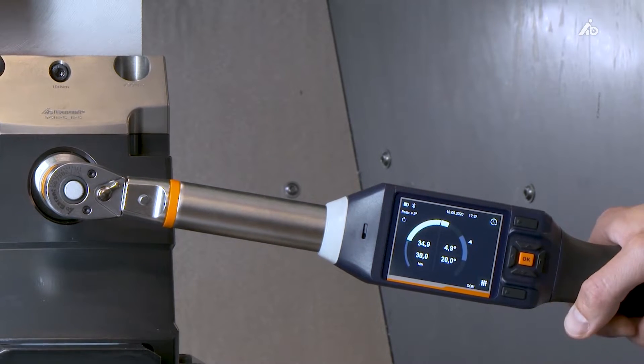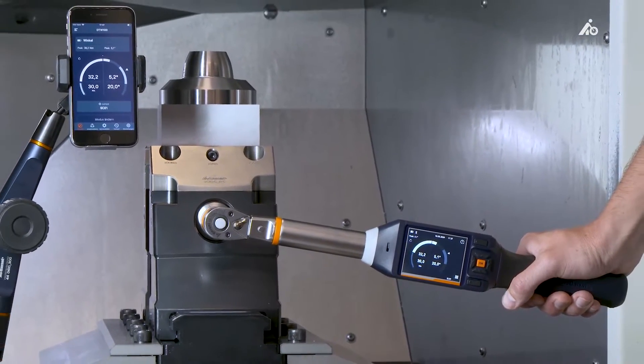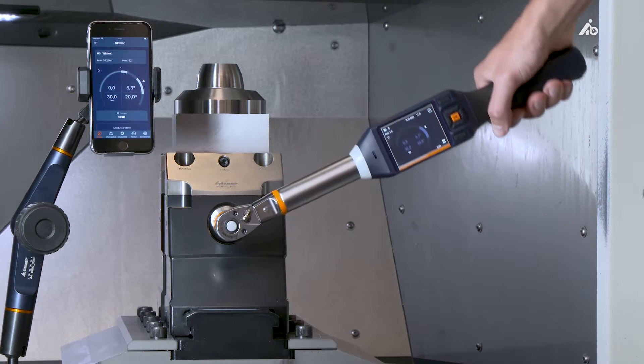The wrench is also equipped with a follow-up function, i.e. if you have tight installation spaces and can no longer tighten, I can follow up with the wrench and the wrench starts measuring again where it left off.